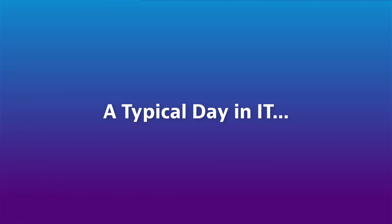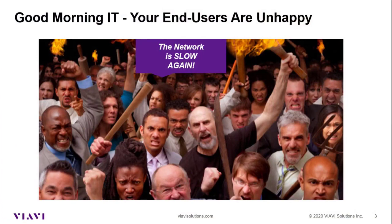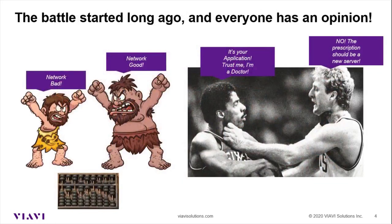Let's have some fun looking at a typical day in IT. This has probably happened to you if you work in the field. Whether you're coming in in the morning, trying to go to lunch, or trying to get home to your family, you're approached by an angry mob — or maybe one or two people — saying the network is slow again, because to them it is the network. They don't understand all of the piece parts. They just want their applications to work so that they can get their work done. It's been going on since the dawn of time: network bad, network good. Is it the application? Is it the server? And it's our job to find it and fix it fast.